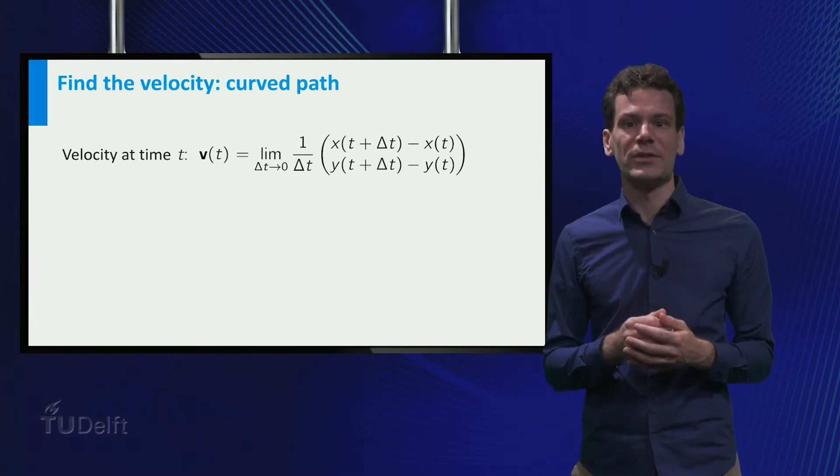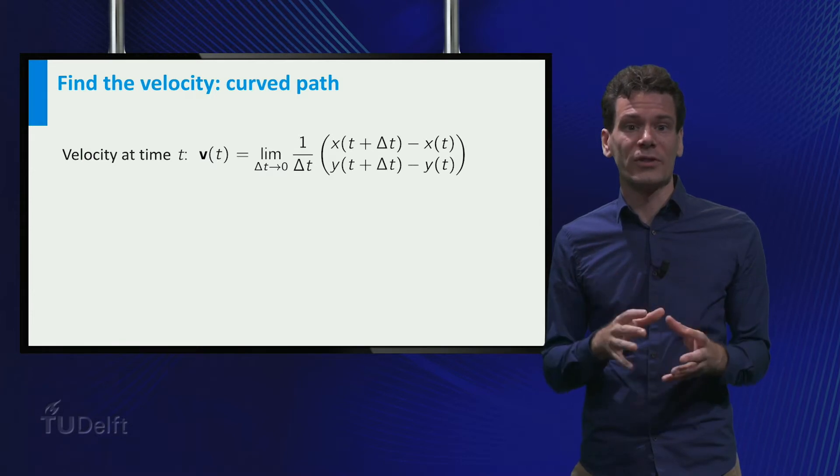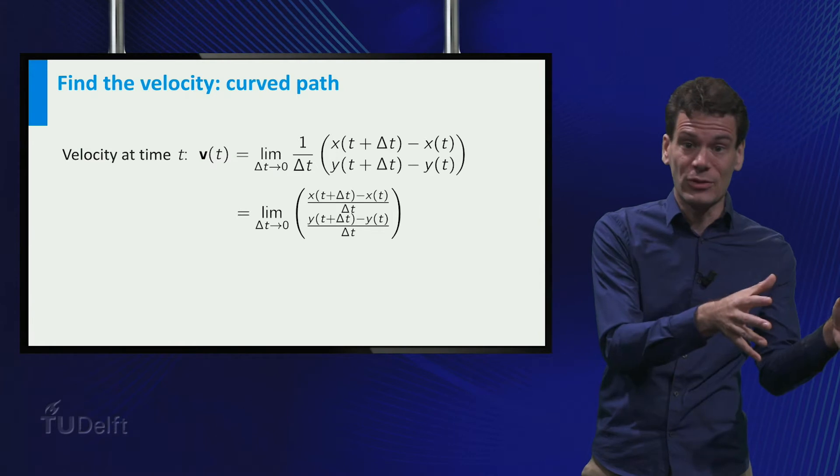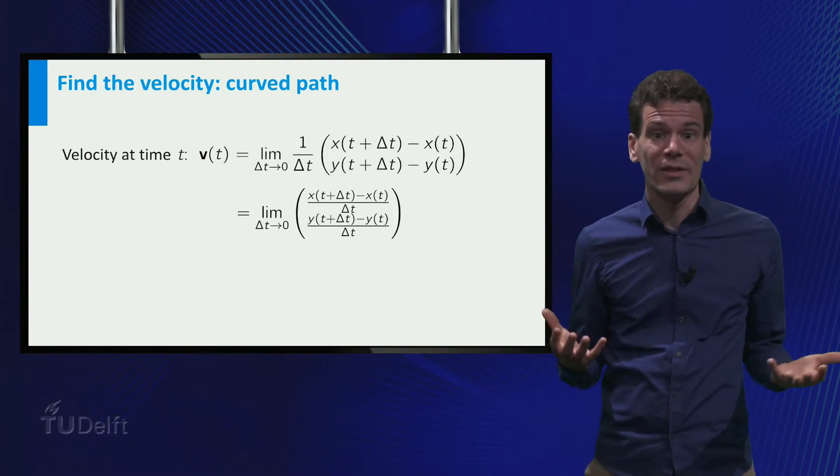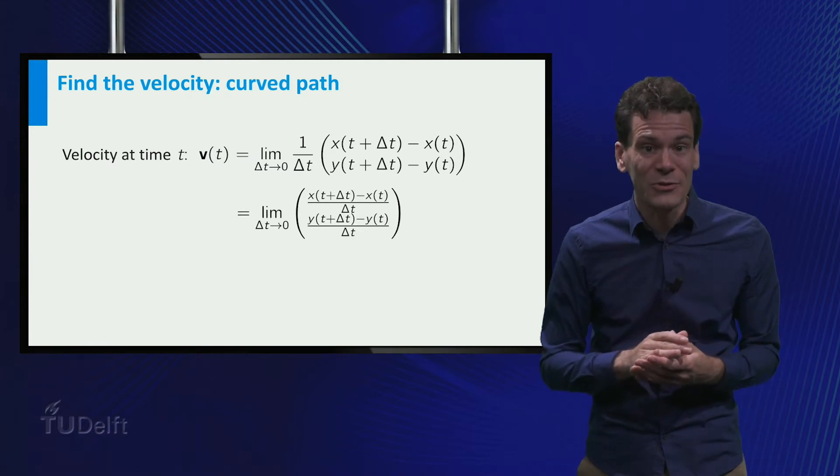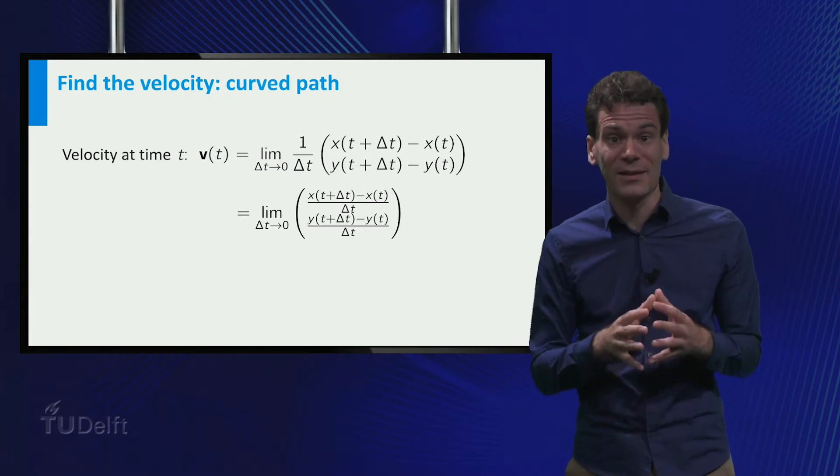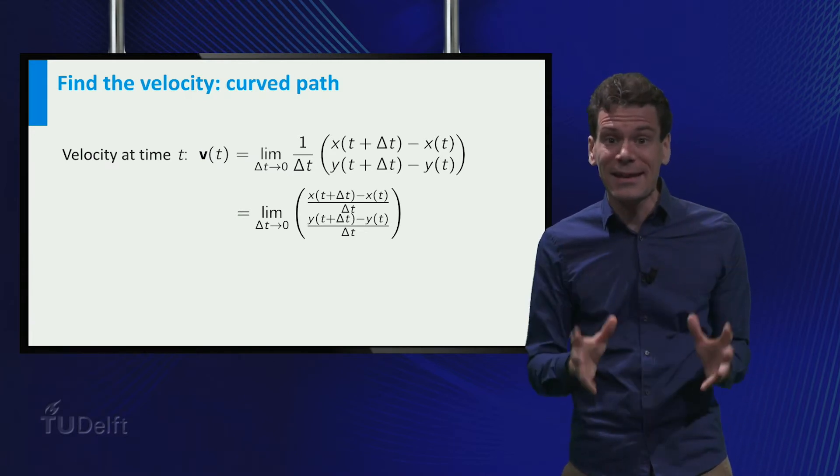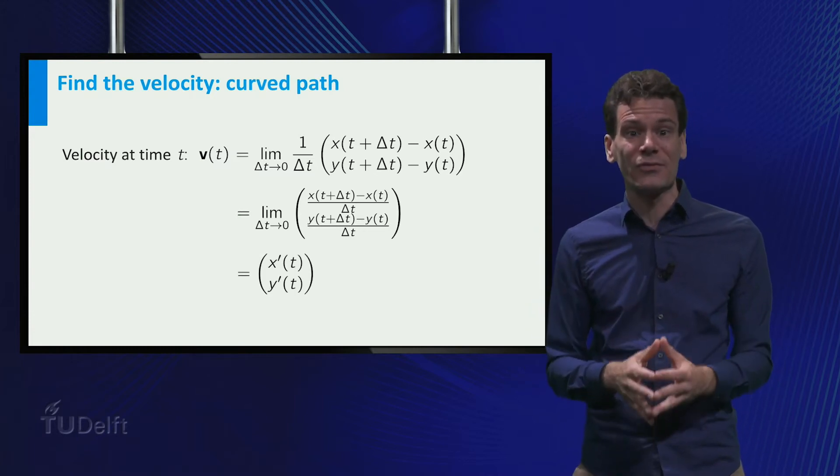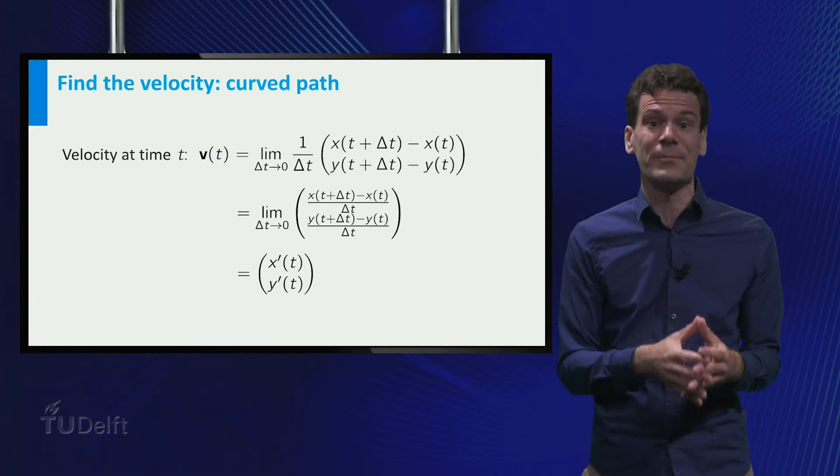Let's have a look at this limit. The 1 over Δt in front is a scalar, so we can take it into the vector. We then get two quotients as components. Do we recognize those? We have seen them before in the definition of the derivative, and indeed, if we take the limit of Δt to zero, we get precisely the derivative of x and the derivative of y as components.